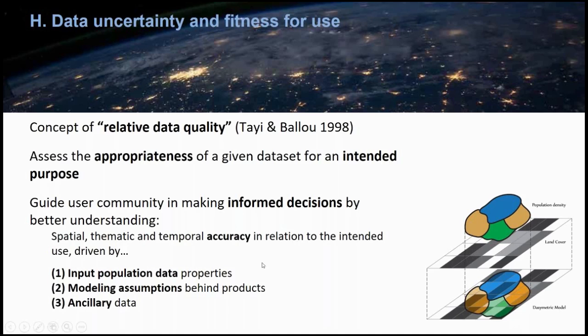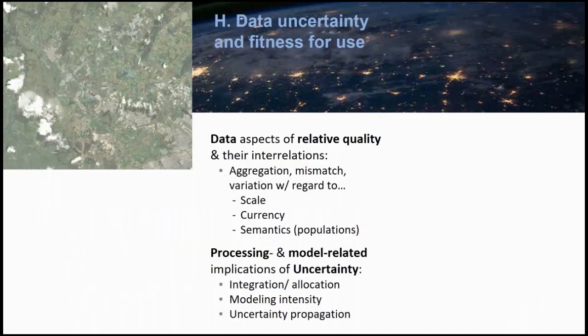It is very important to understand what kind of input population data you are using — Greg showed that input data can be of very different qualities. The modeling assumptions behind the products are also important: is this a heavily modeled data product, or is it based on very simple proportional fitting? And third, users need to be aware of the ancillary data being used and what they have to be concerned about in interpreting results.